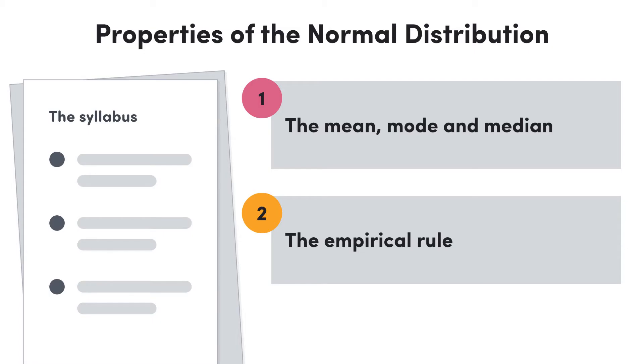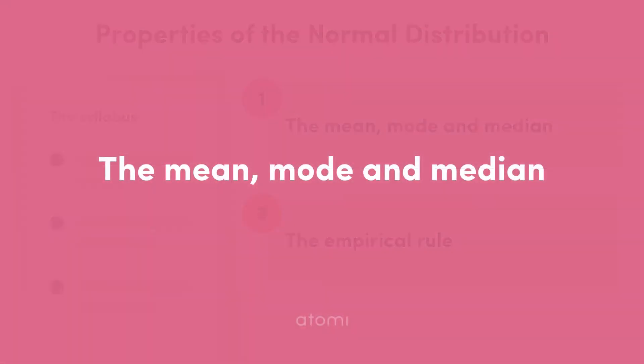Hi everyone, and welcome to this video where we'll be looking at some important properties of the normal distribution. We'll start by looking at where we can find the mean, mode and median in a normal distribution, and then we'll run through what's called the empirical rule before wrapping things up with a summary. Let's get into it.